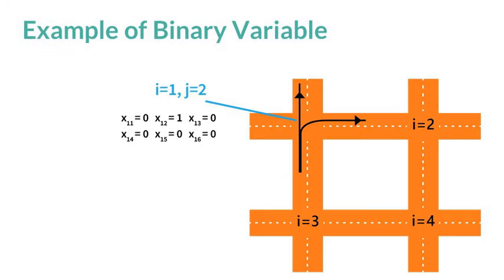Let's look at an example. At intersection number where i equals one, if mode j equals two is active, only x_12 is equal to one and rest of the x's are zero.